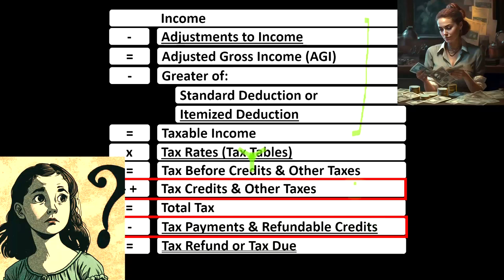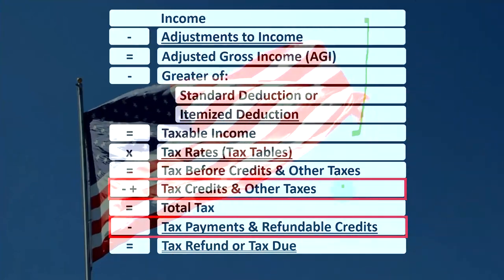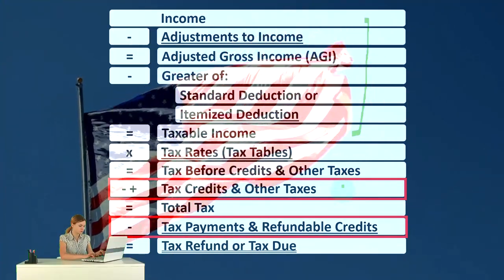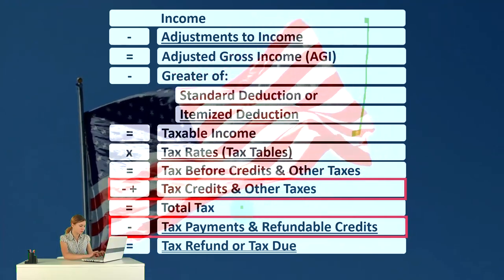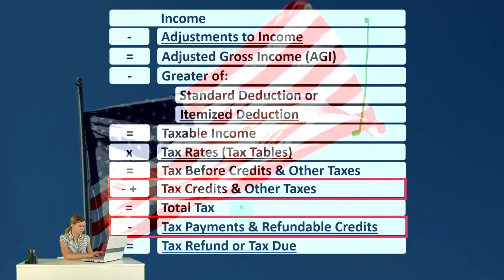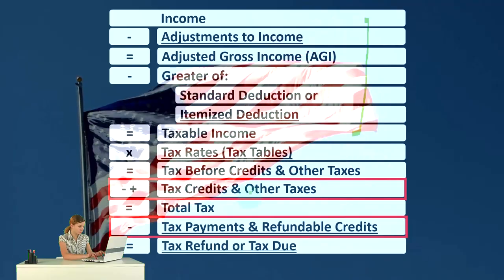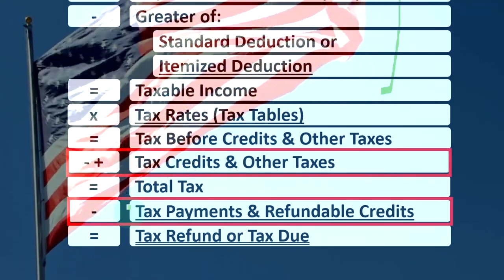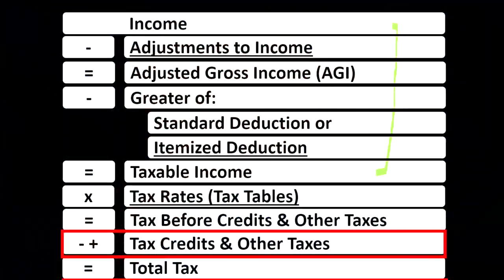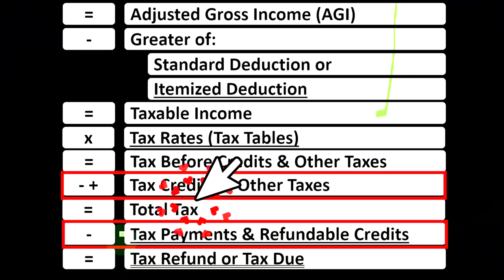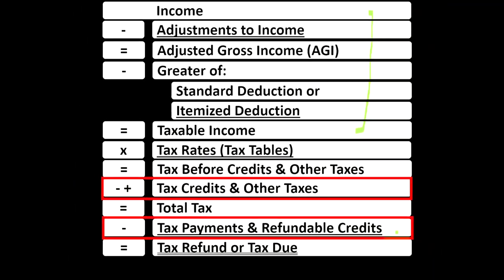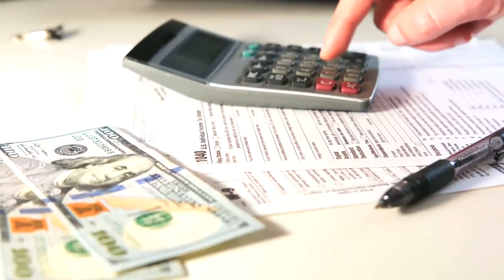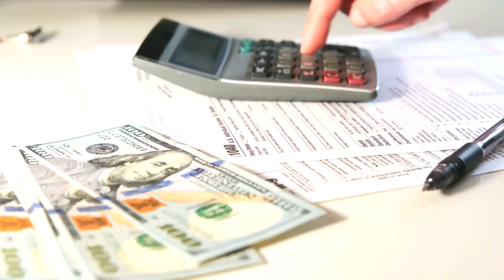We also have to deal with other taxes that are calculated — we calculated federal income tax up top, but you might also have self-employment tax if you have a small business. That gives us our total tax, which factors in credits and other taxes imposed. Then we compare that to withholdings or estimated tax payments. But we also have a separate section for refundable credits, which act as payments — they're not stopped even if tax liability goes below zero.